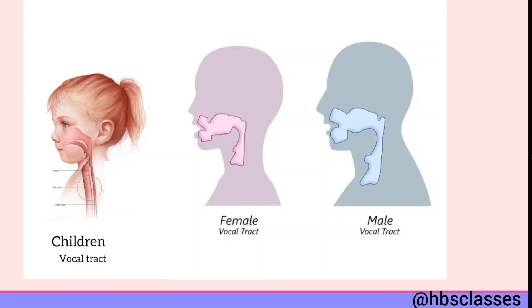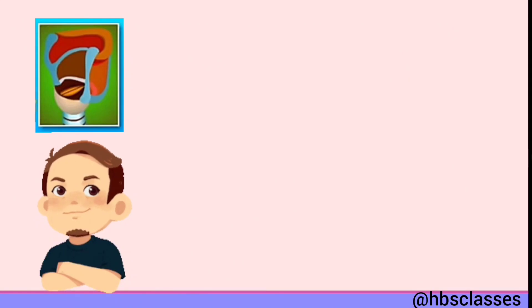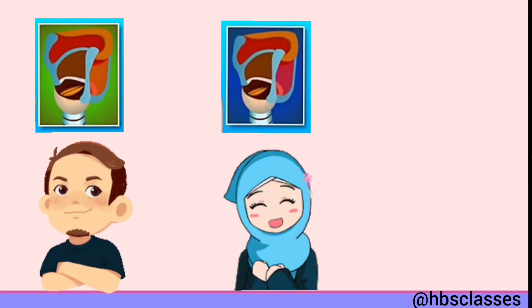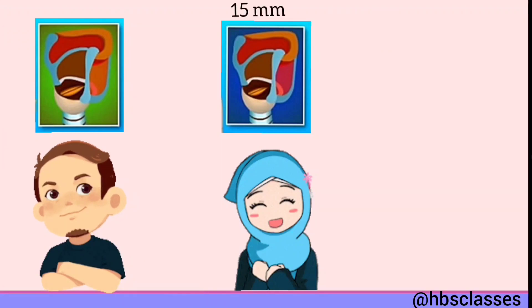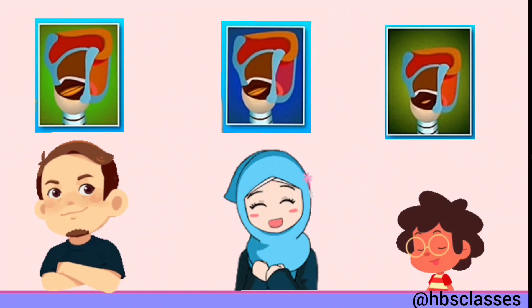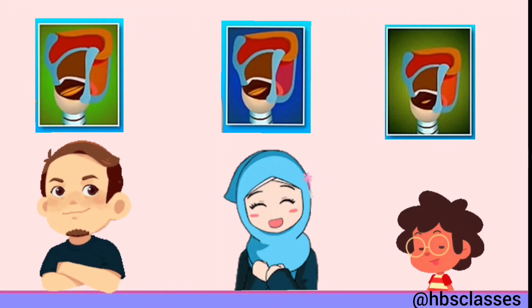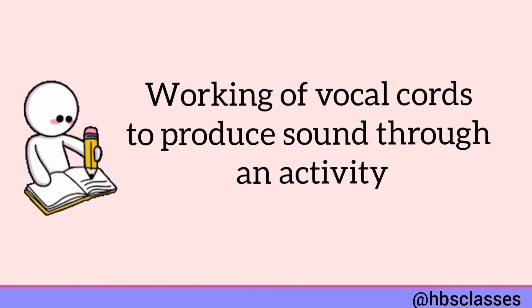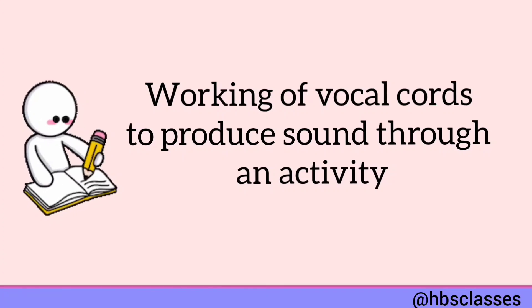Men have longer vocal cords than women and children. The vocal cords in men are about 20 millimeters long, in women these are about 15 millimeters long, and children have very short vocal cords. This is the reason why the voices of men, women, and children are different. Let's understand the working of vocal cords to produce sound through an activity.